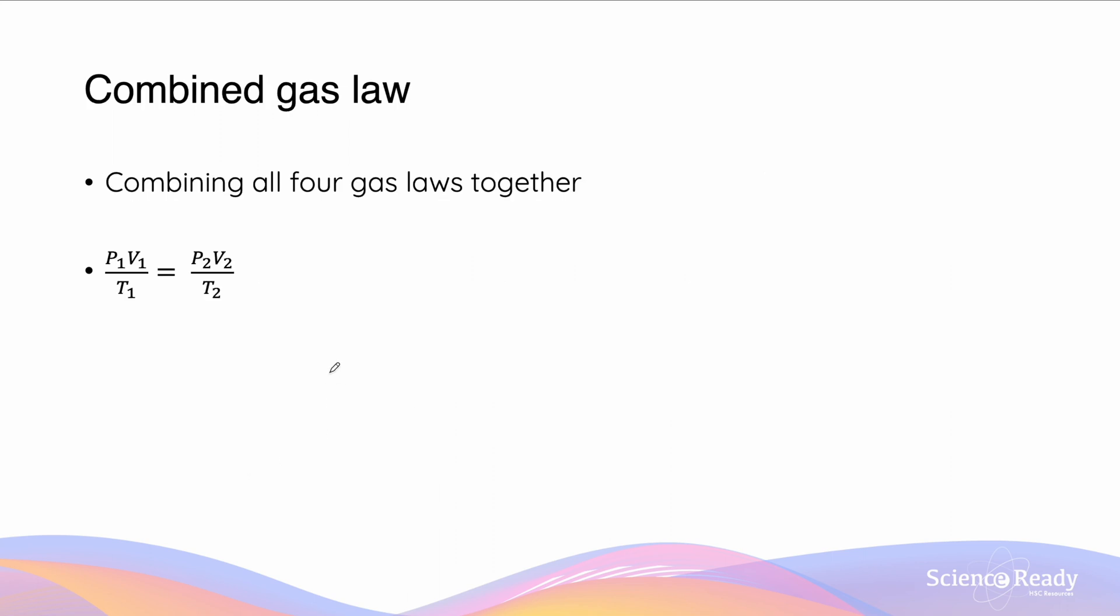So the combined gas law is simply just where we combine all the gas laws together. It gives us the relationship that P1V1 over T1 equals to P2V2 over T2. We know that P is proportional to V, so P1V1 equals to P2V2. We put the second one together with the Charles law, V1 on T1 equals to V2 on T2. We also add Gay-Lussac's law, P1 on T1 equals to P2 on T2. So this is how we got the combined gas law, to say P1V1 on T1 equals to P2V2 on T2.